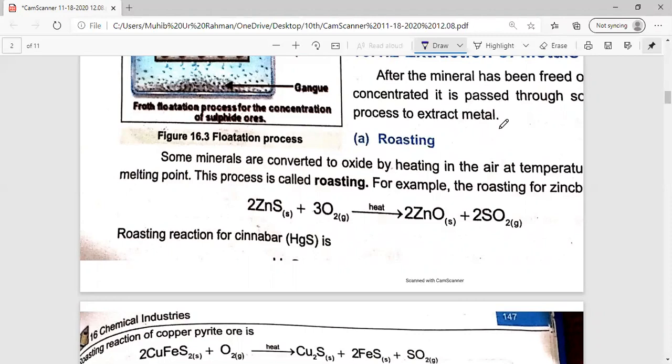It reacts with oxygen in the air and it becomes oxide. For example, zinc sulfide ore, when we heat it below its melting point, the zinc oxide plus sulfur dioxide can be converted.